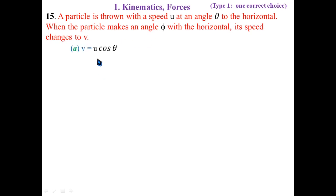In the options: v is equal to u cos θ; v is equal to u cos θ cos φ; v is equal to u cos θ sec φ; v is equal to u sec θ cos φ. Which one should you find?